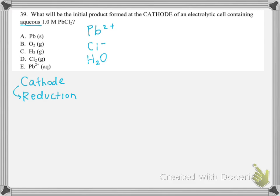Problem 39 asks about an electrolytic cell containing aqueous lead chloride. I like to go through and write out each species present in the cell. We know that reduction happens at the cathode — red cat. Thinking about the reduction half-reactions that could occur: for lead, we could add two electrons to form lead solid, which seems quite likely.